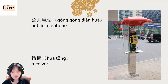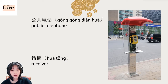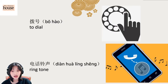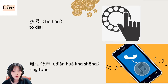Okay, and receiver: 話筒, 話筒, 話筒. And then to dial: 播號 — 播 is flat tone, 號 is fourth tone. 播號, 播號, 播號.